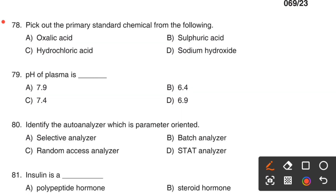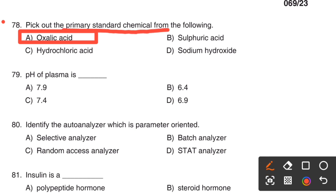Next question. Pick out the primary standard chemical from the following: Option A, Oxalic acid. Option B, Sulphuric acid. Option C, Hydrochloric acid. Option D, Sodium hydroxide. The right answer is Option A, Oxalic acid. The primary standard chemical is oxalic acid.